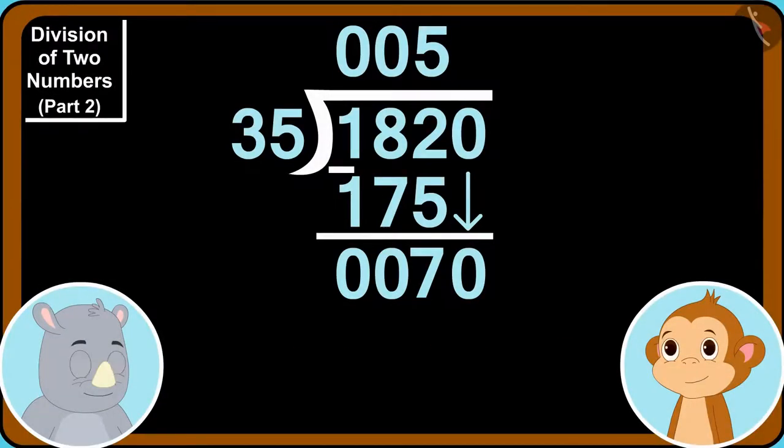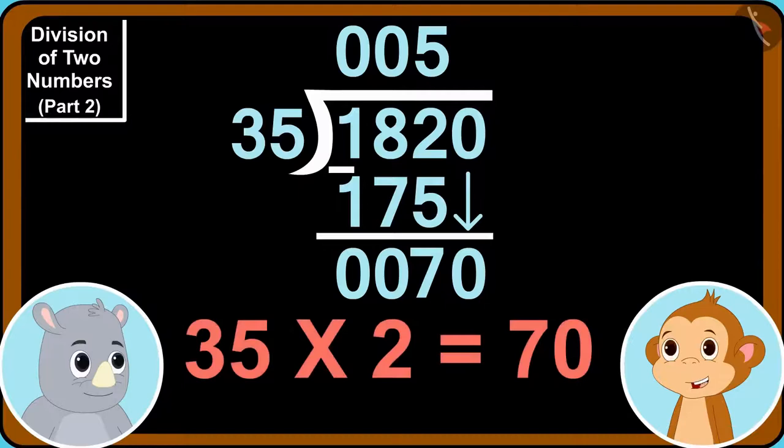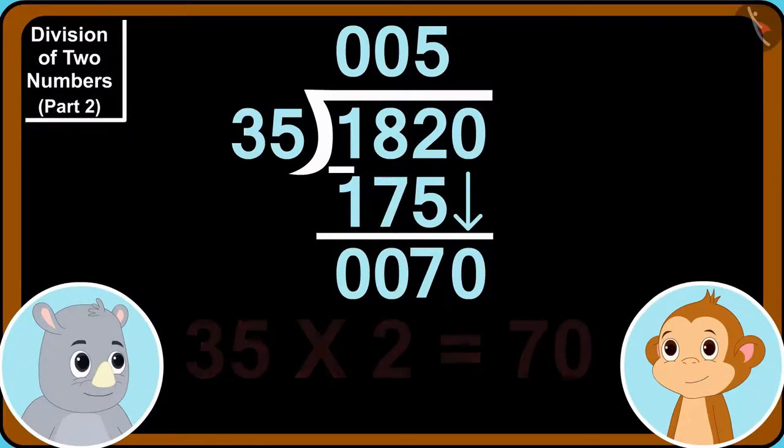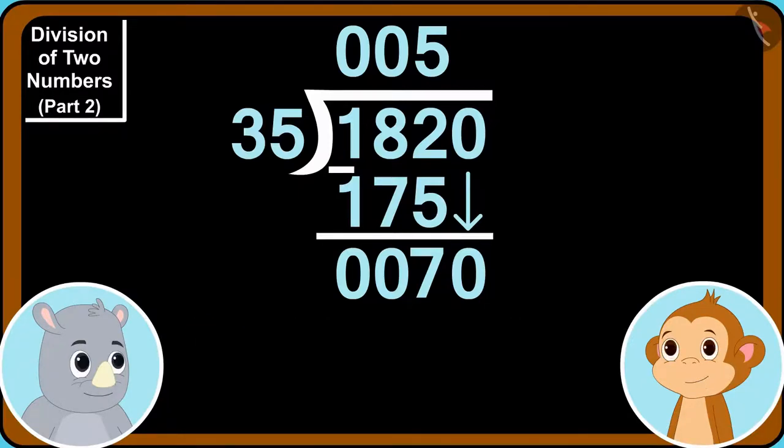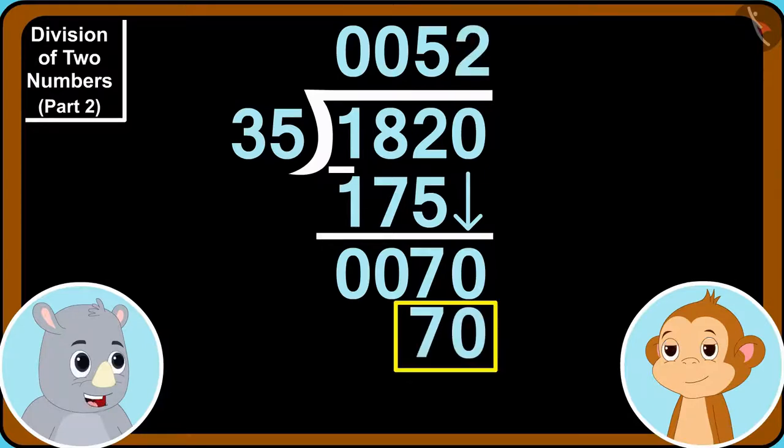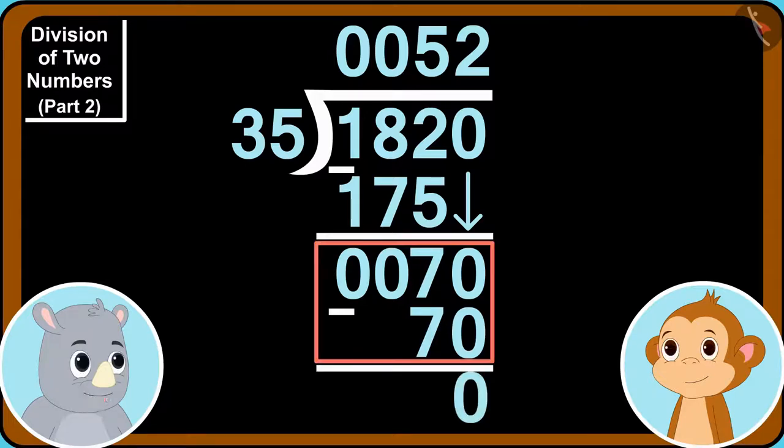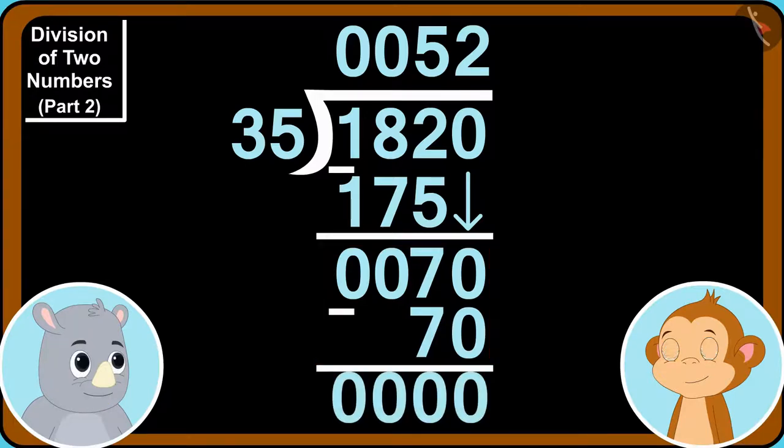Absolutely. 35 times 2 is 70, Babban said to Gaggu. Well done Babban. So, we will now write 2 here and write 70 at the bottom. 70 minus 70 is zero.